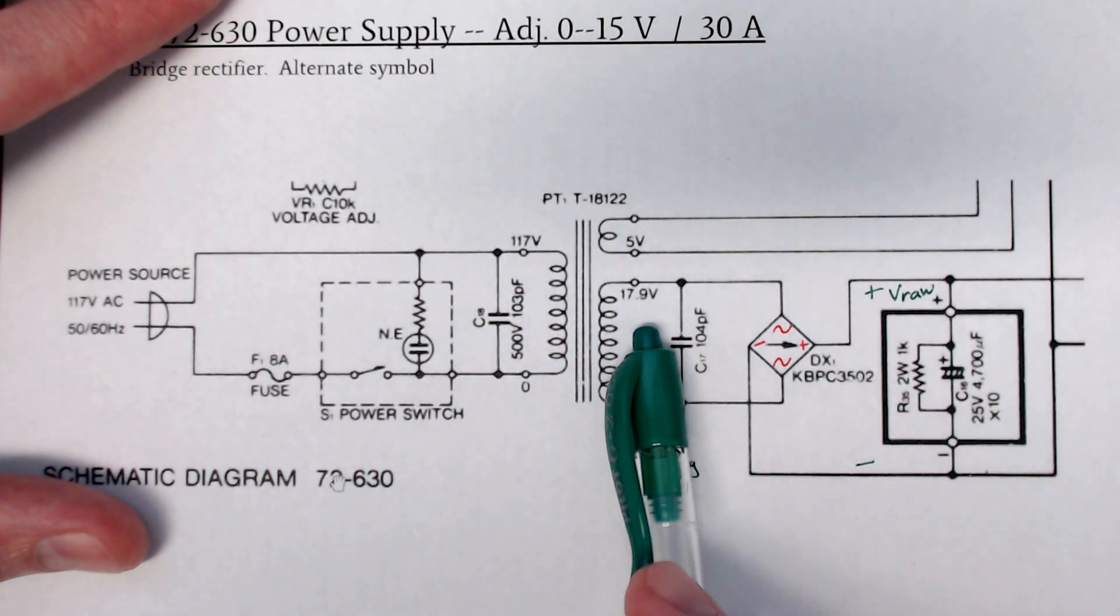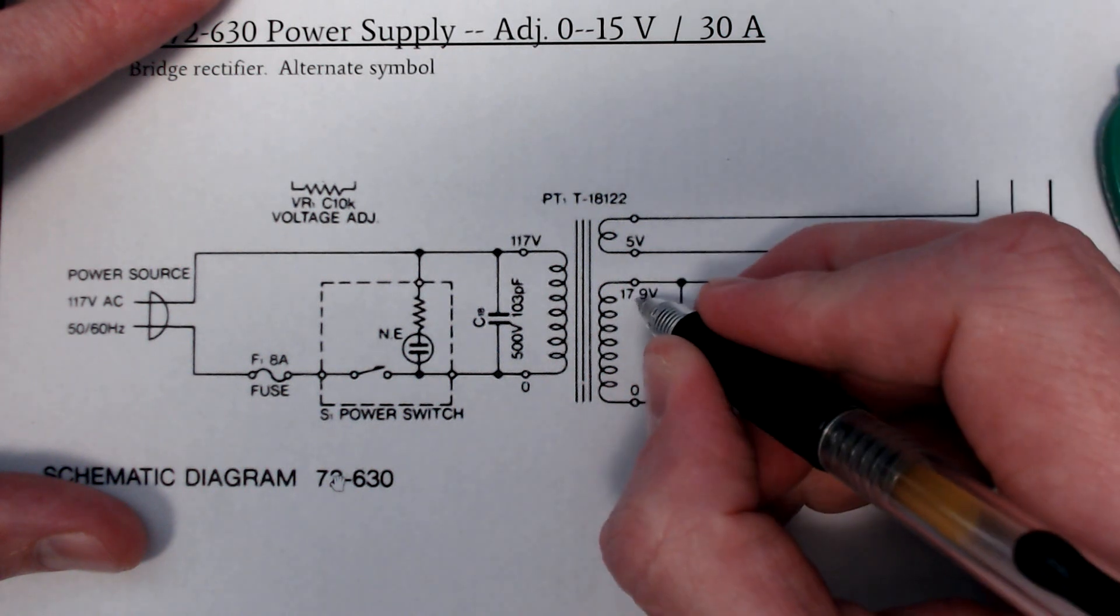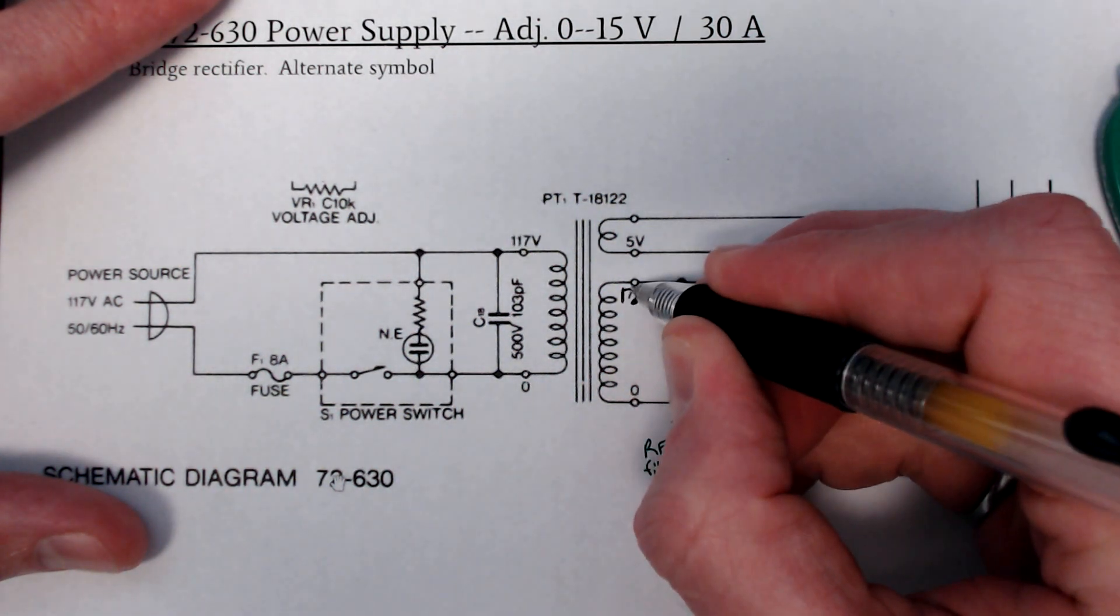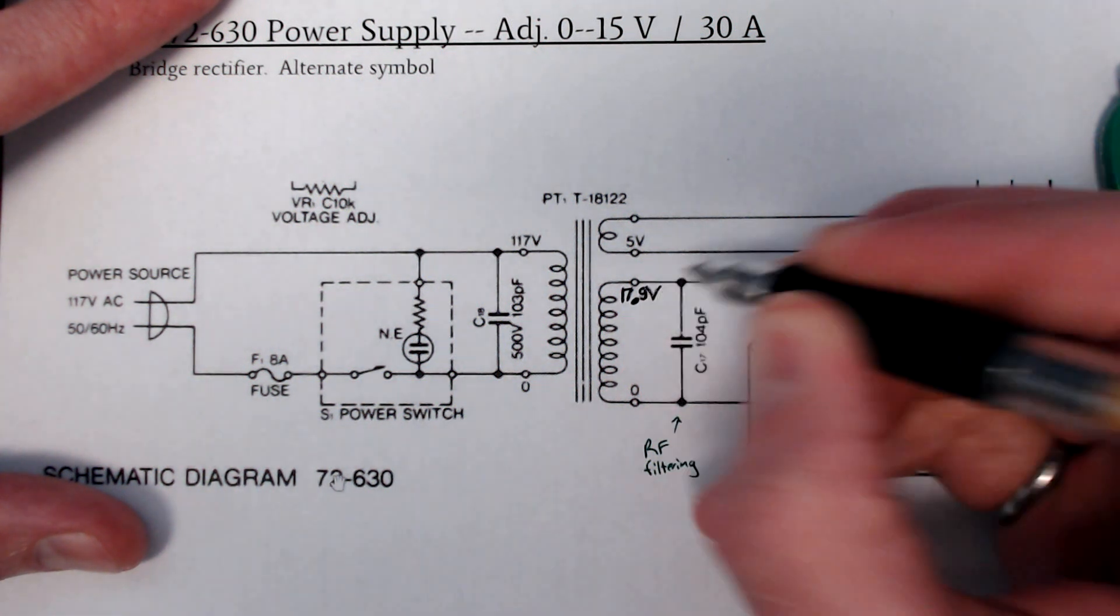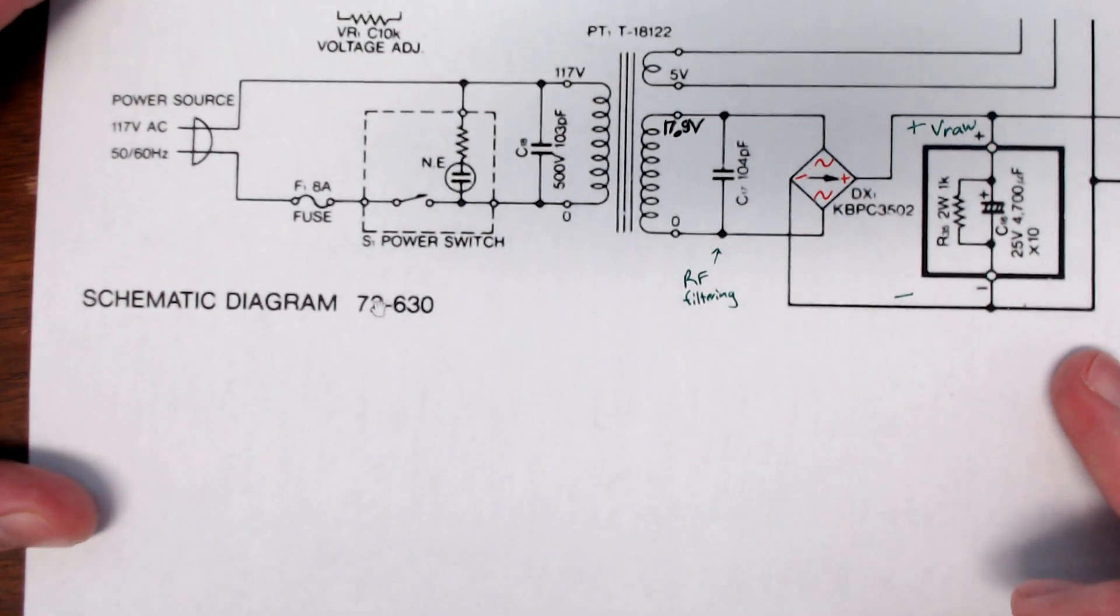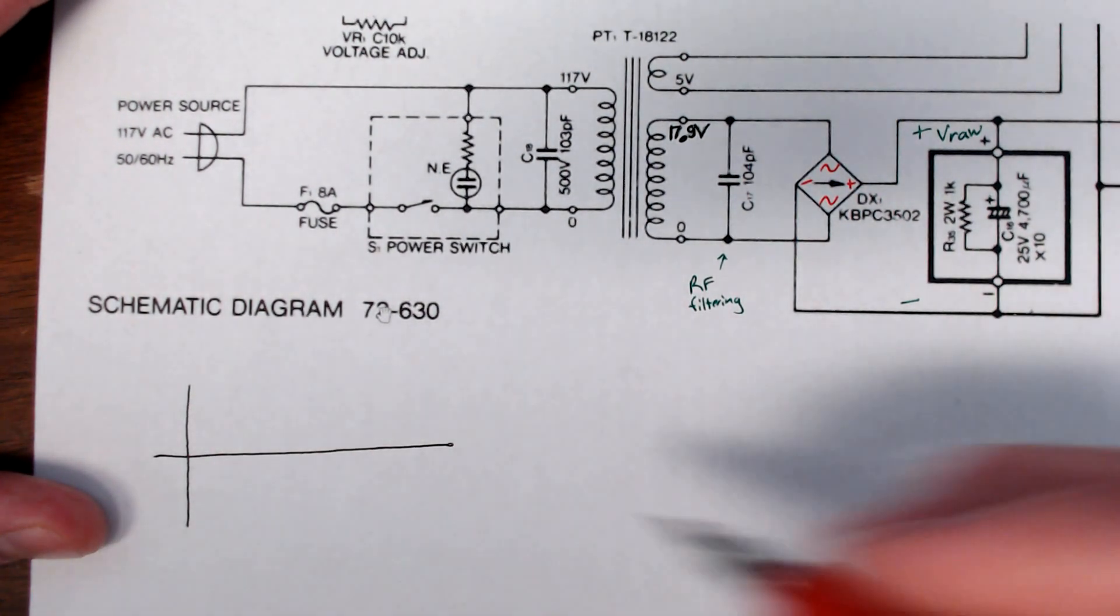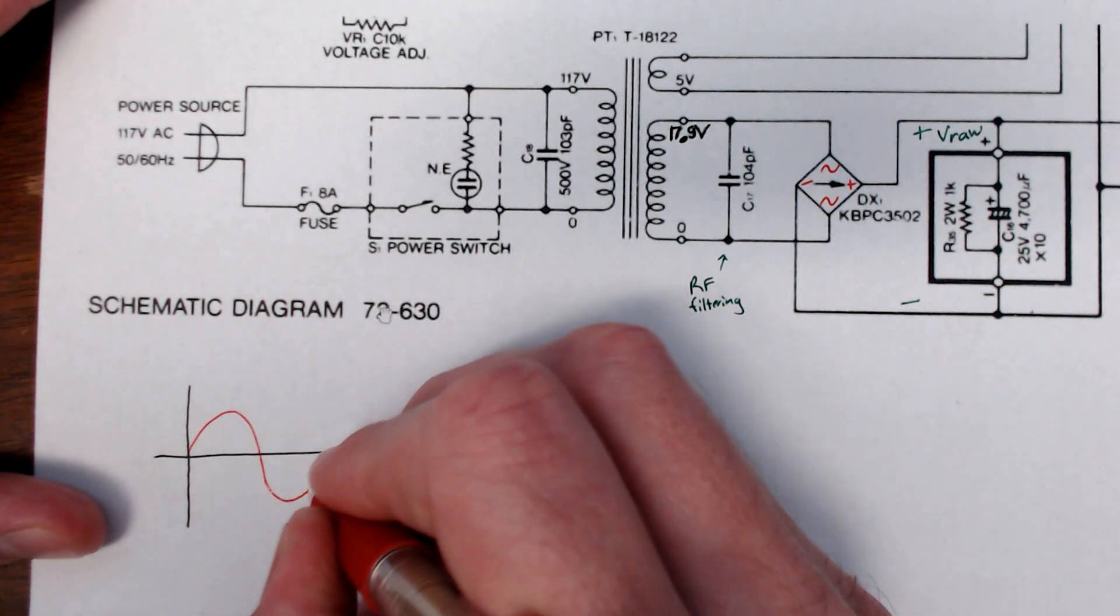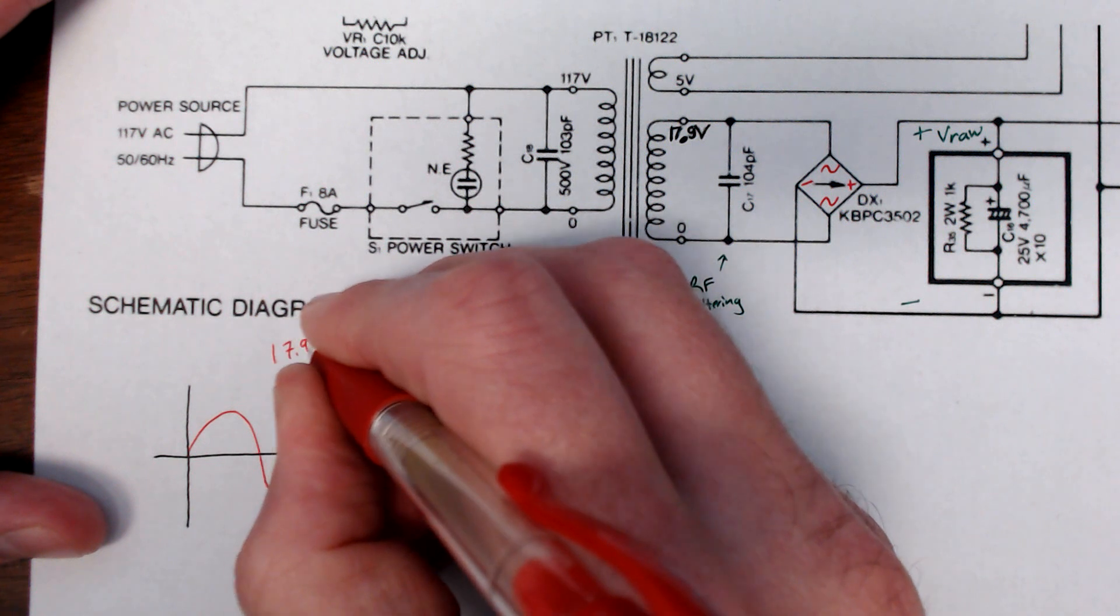A nice thing I like about this one is we see 17.9 volts. And just a little review of what this 17.9 means. We've got a waveform, waveform goes up and down.